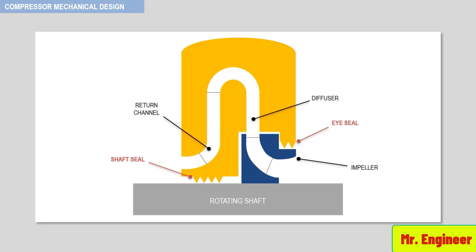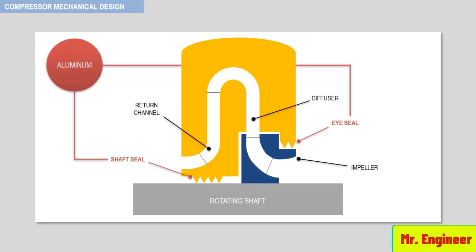Interstage seals are usually manufactured of aluminum to ensure that contact with the rotor does not result in an external excitation to cause vibration. However, certain gases and saturated gas mixtures require that alternative materials be used.